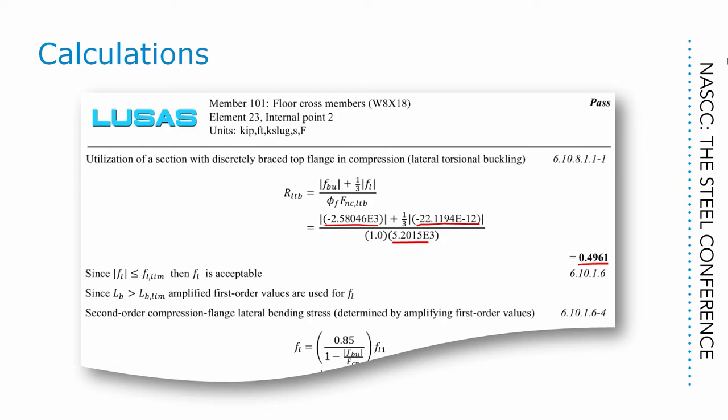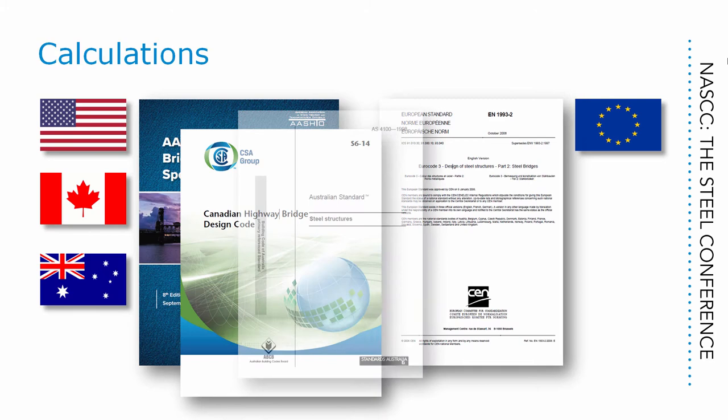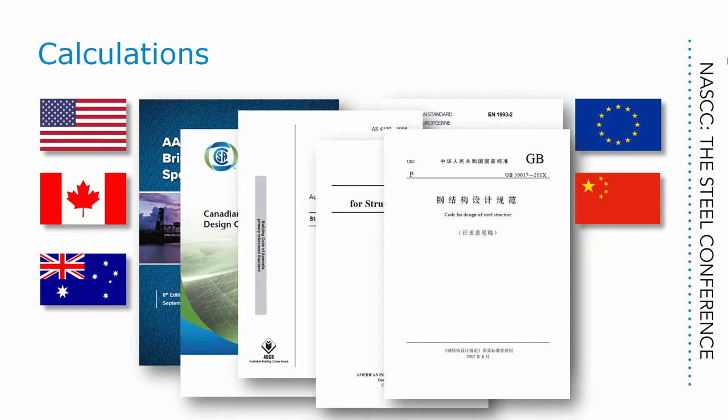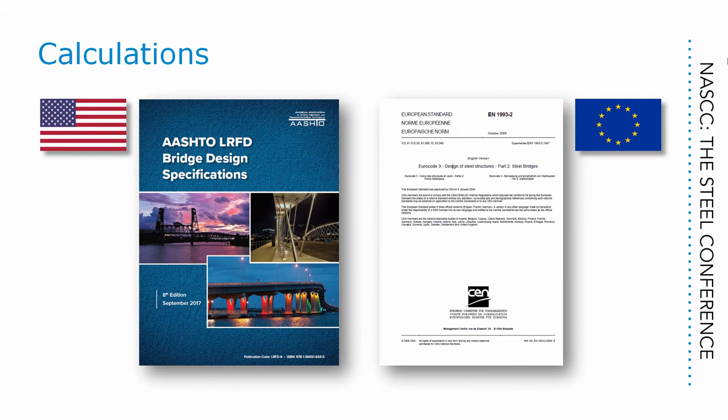LUSAS has steel design calculations covered for a variety of codes of practice from different countries, with more on the way. This makes it relatively easy to carry out calculations to more than one code and potentially make this kind of comparison. On a normal project you wouldn't do that, whereas in this paper we did. We primarily compared AASHTO 8th edition with the Eurocode EN 1993 Part 2, although we also drew on AASHTO 7th and the Canadian code CSA S614. Then we took the time to unravel the differences — and it was possible to understand those differences to a deep level because we had the people who programmed the software for all of them on the team. So, what did we find?